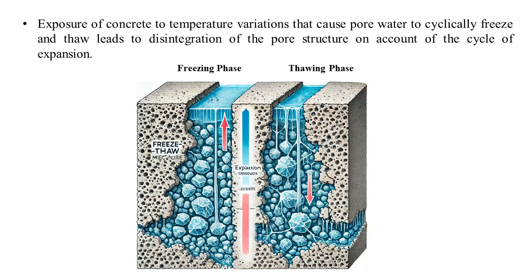The exposure of concrete to temperature variations that cause pore water to cyclically freeze and thaw leads to disintegration of the pore structure, on account of cycles of expansion. When water freezes at zero degrees it expands, and if the concrete is saturated with water and the temperature causes the pore water to freeze, it will cause expansive stresses in the surrounding pore structure.